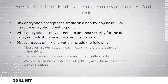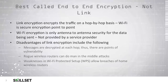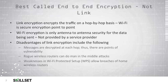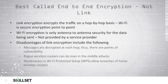The disadvantages of link encryption are that the messages are decrypted at each hop, adding additional points of vulnerability. We still have to worry about rogue wireless routers with man-in-the-middle attacks, which will trick your users into connecting to them. We also have some weaknesses in wireless-protected setup, or Wi-Fi Protected Setup. This is a feature found in most routers that allows users to press a button or enter a PIN number to make setup easier when adding a new device. The problem with this technology is it's very easy for an attacker to take advantage of it and gain access to your network.